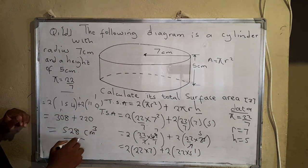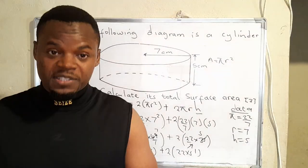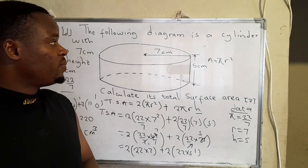Square centimeters. So that's how you find the total surface area of your cylinder.